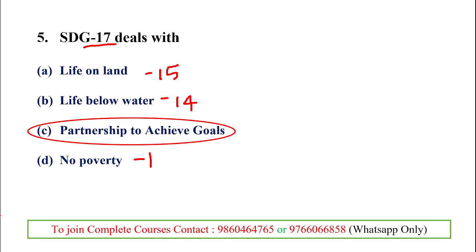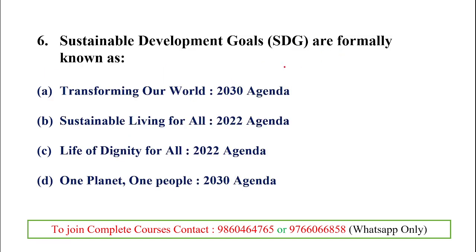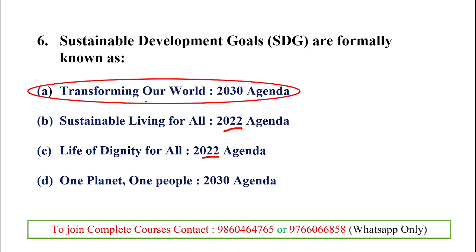The formal name for the SDG is 'Transforming Our World: The 2030 Agenda for Sustainable Development.' Note that the agenda is for 2030, not 2022. It is also known as the Global Goals. It was adopted by the United Nations in 2015, came into force in January 2016, and is a universal call to action to end poverty, protect the planet, and ensure all people enjoy peace and prosperity.